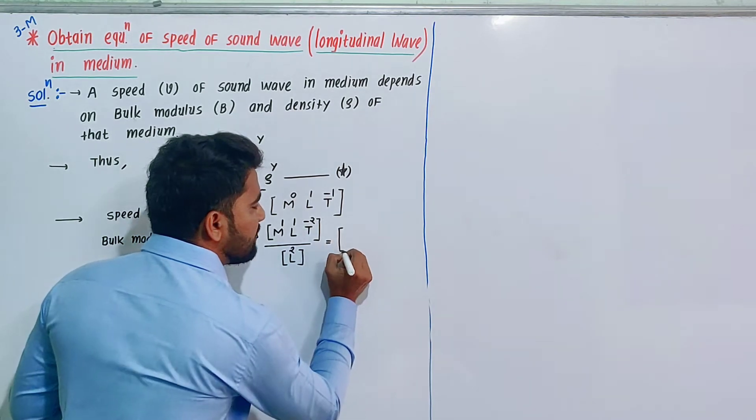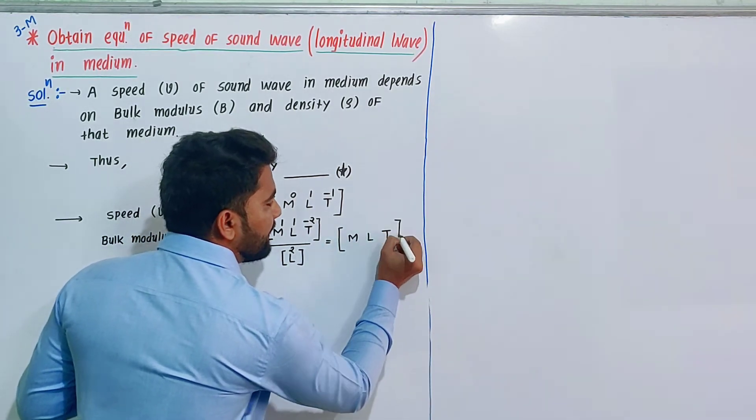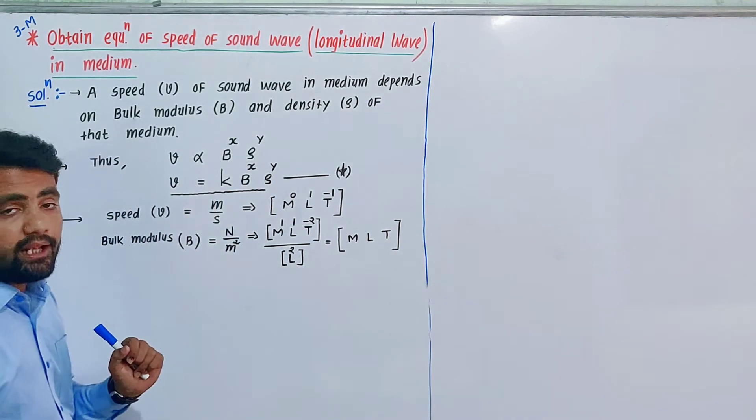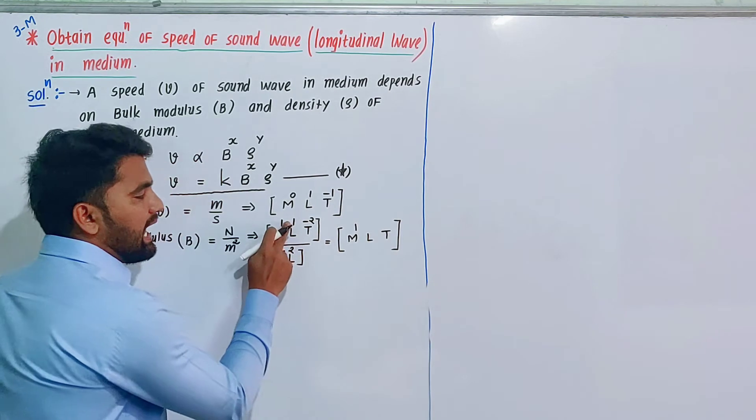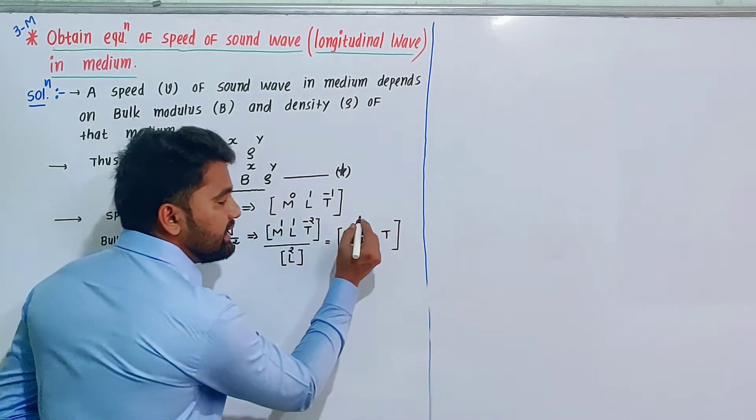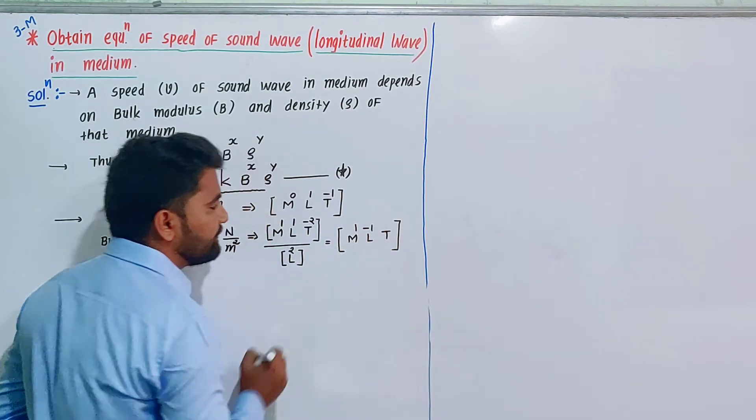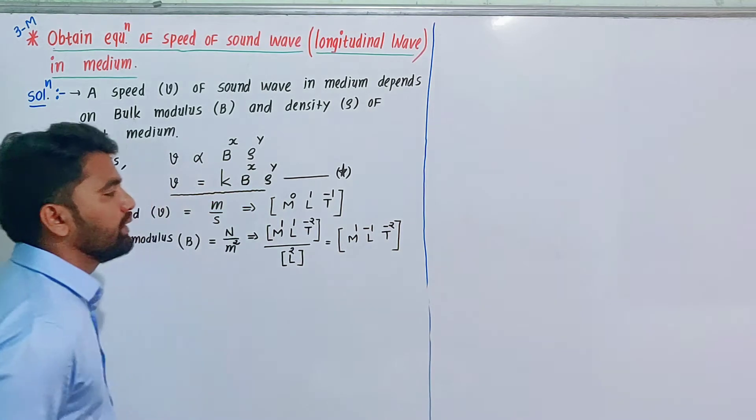Dimensional formula in MLT form: bulk modulus is M^1 L^-1 T^-2.